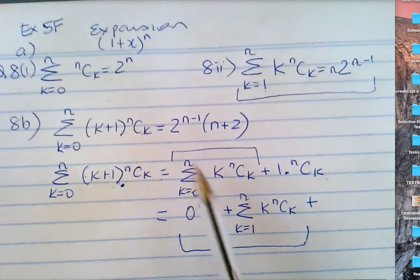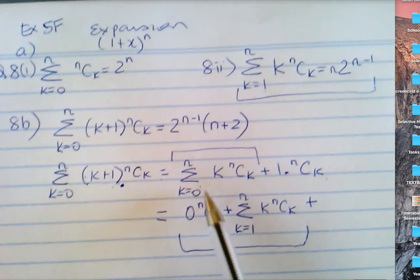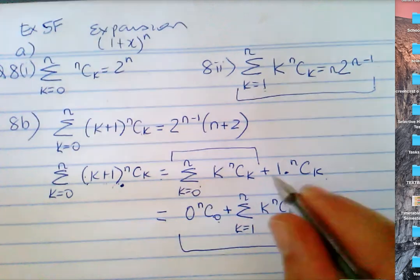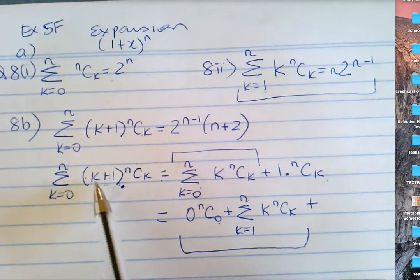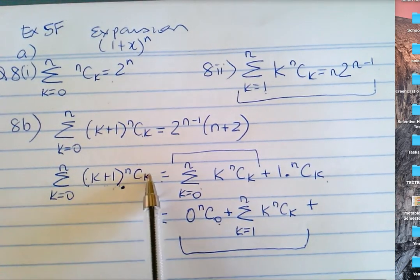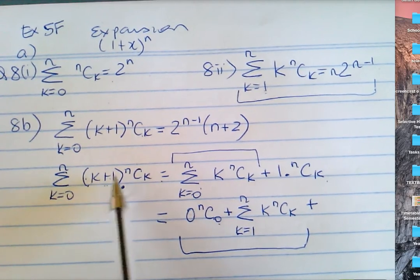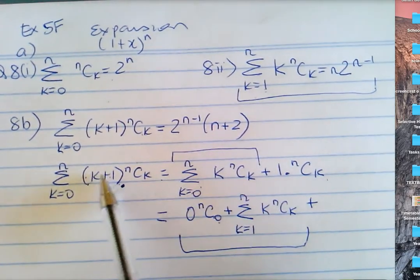If I want to sum from k is zero to n, it's like doing k is zero and then summing from k is one to n. Because it was k times nCk plus one times nCk — that's my expansion.